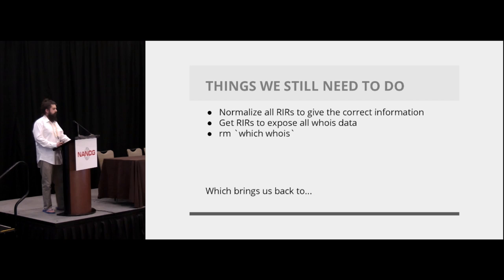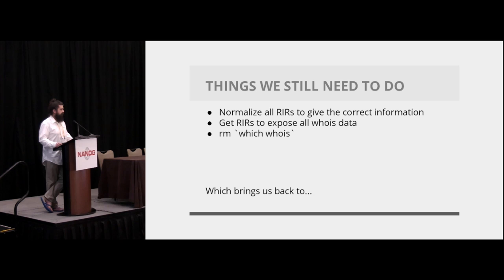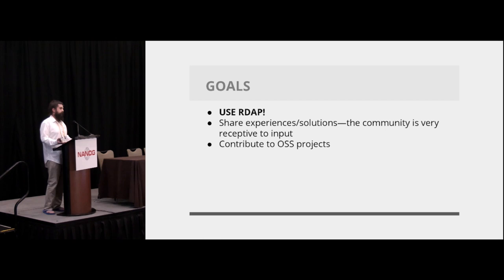Essentially the things that need to be done are: we have a standard way to get data, but not all RIRs are giving all that data. There's a standard way for them to give it out — they're just not necessarily outputting it — because I should be able to get all the same information from WHOIS via HTTP. Once they do that, we can just get rid of WHOIS. It just takes people to use RDAP, complain to them, and point out inconsistencies. They will happily fix it. There are ongoing working groups working on this, but without people using it, it's hard to figure things out.